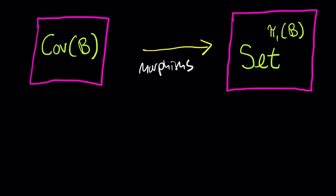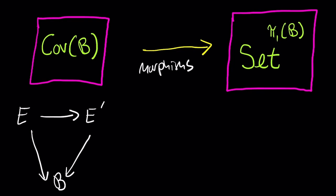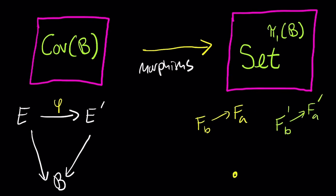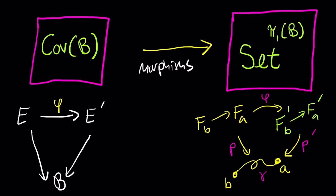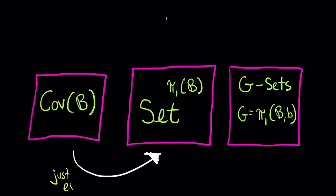This assignment must be compatible with morphisms. If you have a morphism φ from a cover E to a cover E prime, you need a natural transformation between the assigned functors. On each point b, restrict φ to the fiber over b to get a map from the fiber in E to the fiber in E prime. You check that this collection of functions is equivariant with respect to paths in the base space — which holds because lifting a path to E and then applying φ gives a lift to E prime. This concludes the passage from coverings of B to functors from the fundamental groupoid.